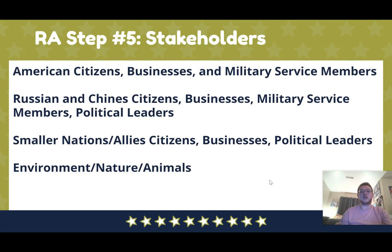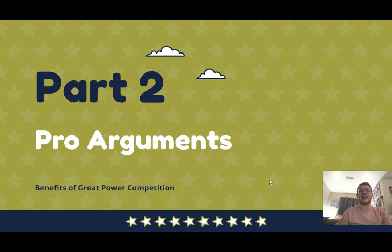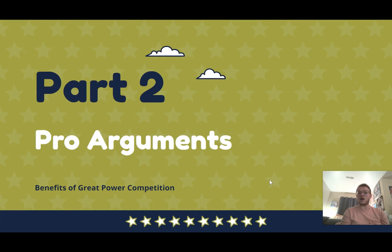Even though this topic feels complicated, it's incredibly important for high school students to be well-informed. Now let's discuss how to argue it. I have 10 pro arguments and 10 con arguments. Pro arguments are benefits of great power competition, structured as: before GPC, something bad was happening; GPC helped fix it; fixing that is good. This structure is called uniqueness, link, and impact — uniqueness is the status quo, link is what changed, and impact is why it matters.